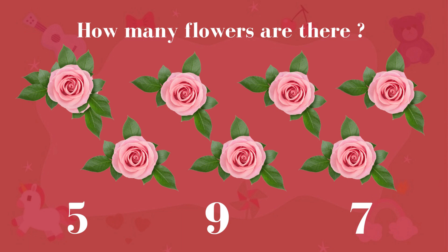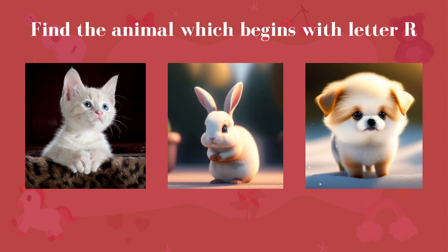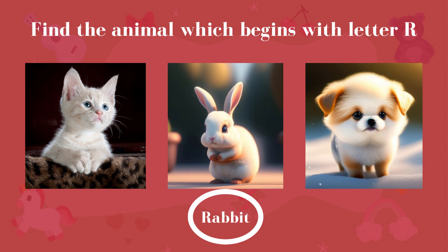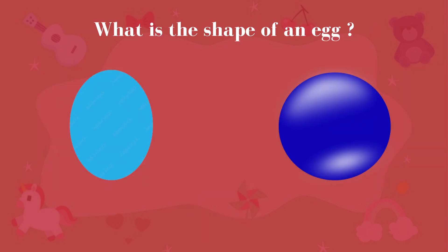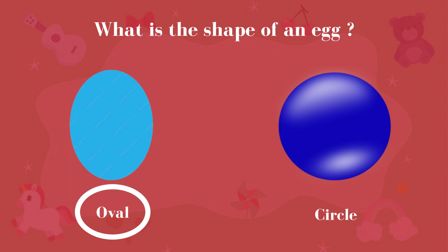How many flavors are there? 7. Find the animal which begins with the letter R. Rabbit. What is the shape of an egg? Oval.